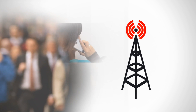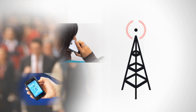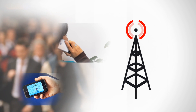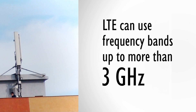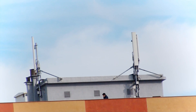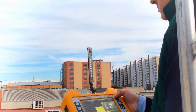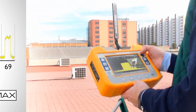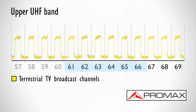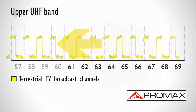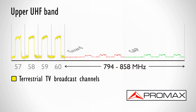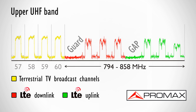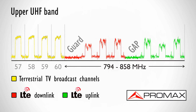In terms of radio frequency spectrum allocation, LTE can use different frequency bands, ranging from a few hundred MHz to more than 3 GHz. There is one particular frequency band that draws the attention of television antenna installers. Under the so-called Digital Dividend Program, television broadcasters using channels 61 to 69 must transfer the TV channels to lower frequencies, making the band available to mobile phone operators. They call it LTE Band 5.